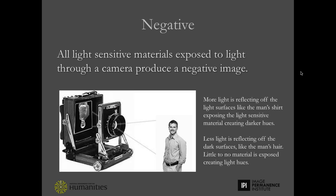A negative is a tonally reversed image on a transparent support. The inventors of photography, of which there are many, had a common goal: to permanently fix the image in the camera obscura using chemistry. The camera obscura was an optical device used as a drawing aid. A camera can be as simple as a box with a hole in it, or it can be more complex, having a lens, shutter to control exposure, and bellows to control focus.